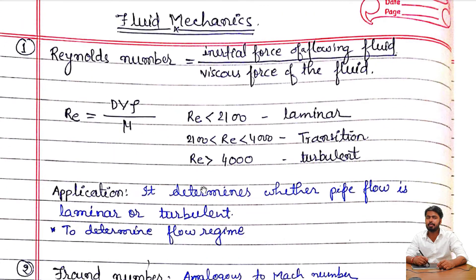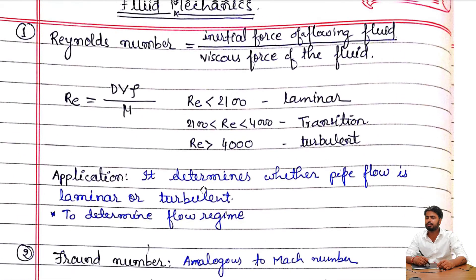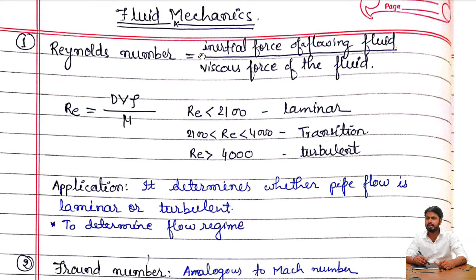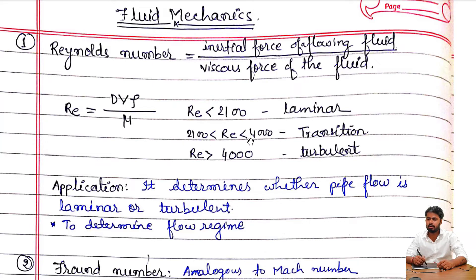In fluid mechanics dimensionless numbers, the first one is the Reynolds number. Reynolds number is defined as inertial force of a flowing fluid divided by viscous force of the fluid. Its formula is Re = dvρ/μ. When Re < 2100 it is laminar flow; when Re is between 2100 and 4000 it is transition flow; when Re > 4000 the flow is turbulent.